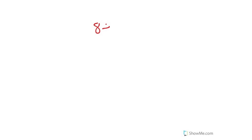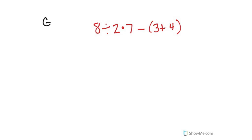Let's try this one: 8 divided by 2 times 7 minus 3 plus 4. Some of you might think that's too long or hard, but it is super duper easy. Let's see — how many operations do we have here? We have division, multiplication, subtraction, and addition. We have 4 operations, so automatically you should know that you need to follow the order of operations, which is germ desks.